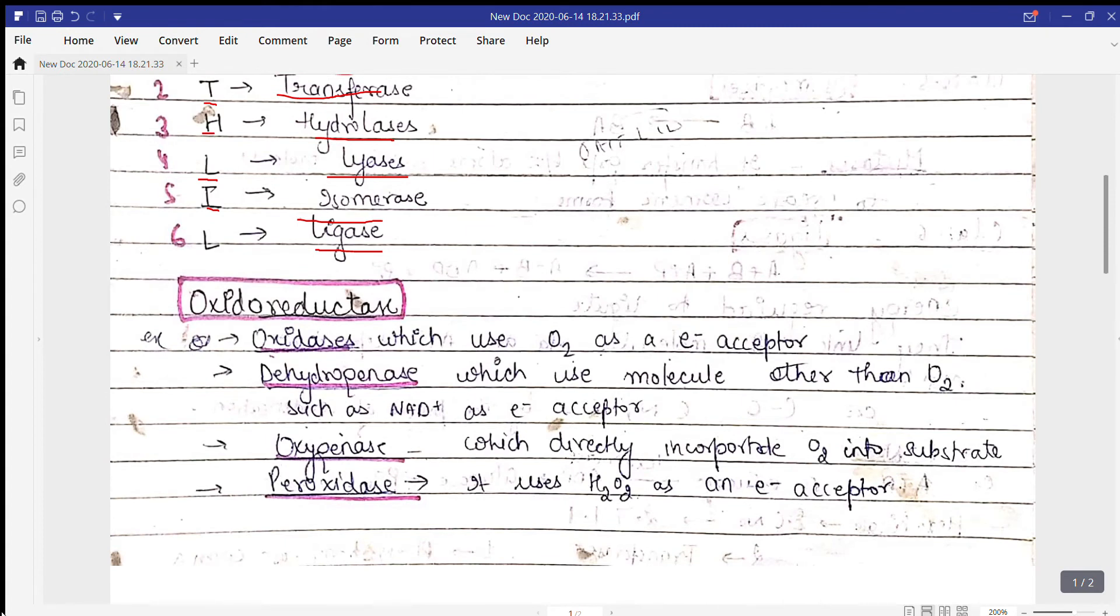First is oxidoreductase. This class includes all enzymes which work in either oxidation or reduction processes. Examples include oxidases, which use oxygen as an electron acceptor, and dehydrogenases, which use molecules other than O2, like NAD+, as electron acceptors. In many chemical reactions, NAD+ undergoes dehydrogenase process to reduce into NADH plus H+.